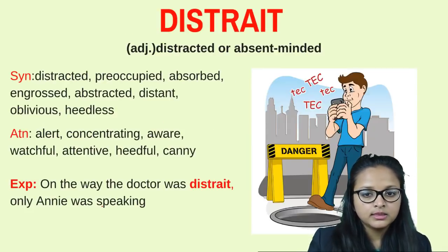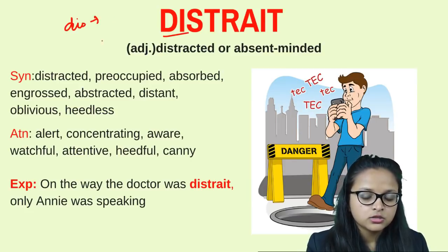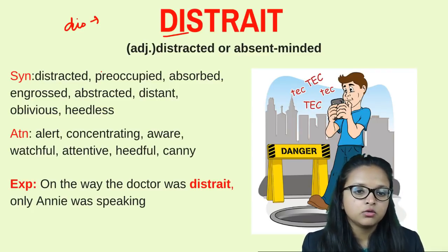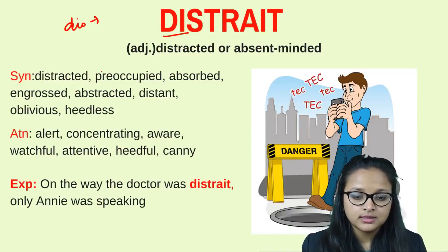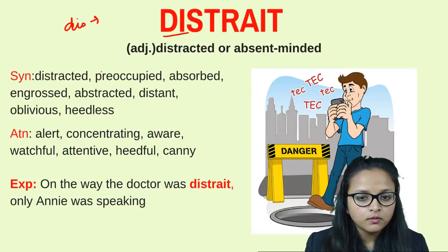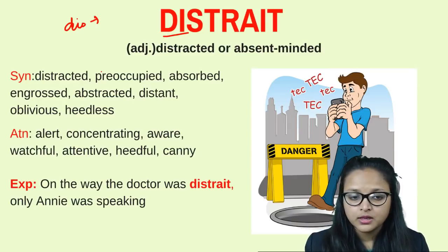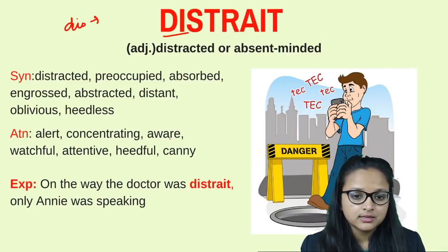The next word is 'distrait.' When a word starts with 'dis,' it is usually negative. Distrait describes a person who is always absent-minded and does not know what is happening around them. They are distracted — their mind is somewhere else. They are so absorbed in their own thoughts that they don't notice if anyone is talking or working around them. Synonyms are distracted, preoccupied, absorbed, engrossed, or abstracted.